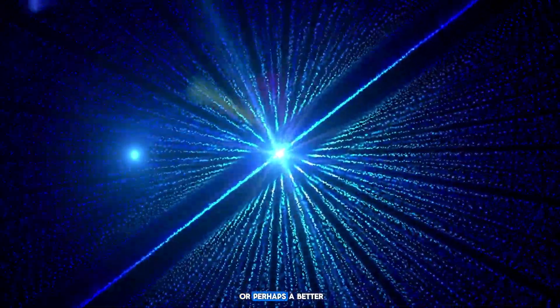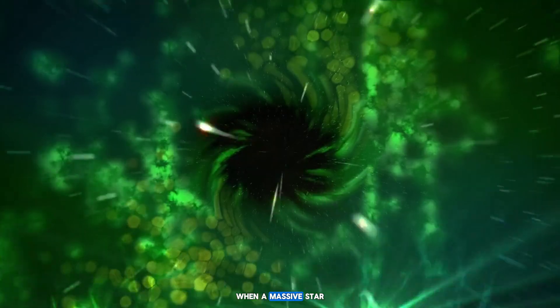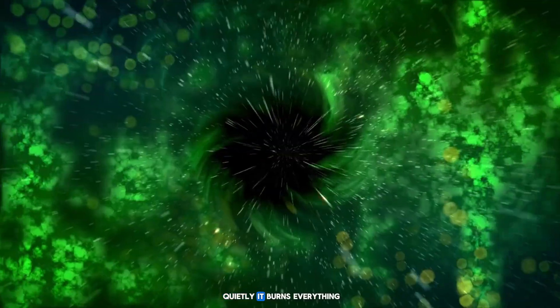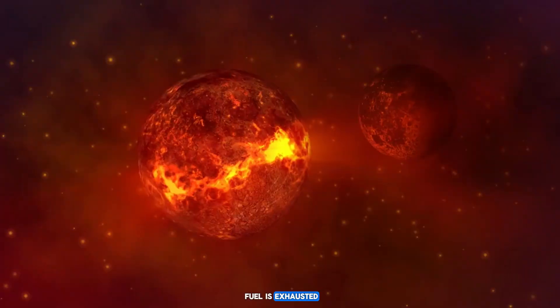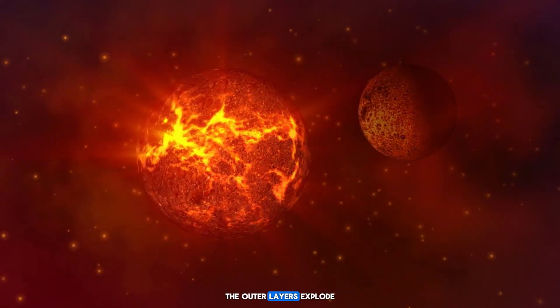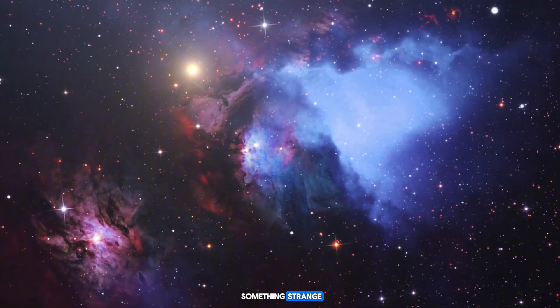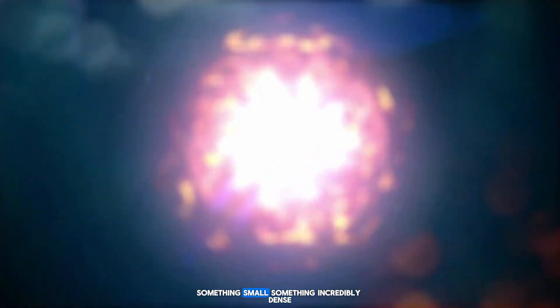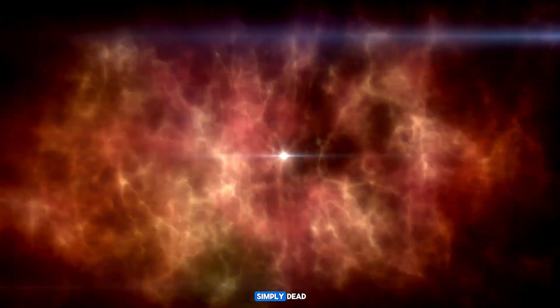When a massive star reaches the end of its life, it does not go quietly. It burns everything it has, trying to fight the inevitable gravity. And when its nuclear fuel is exhausted, gravity wins. The core collapses, the outer layers explode in a supernova, and what remains is something strange, something small, something incredibly dense. A neutron star is formed.